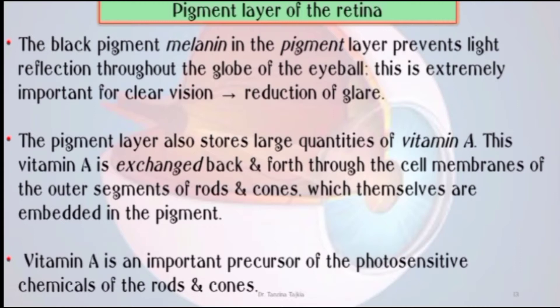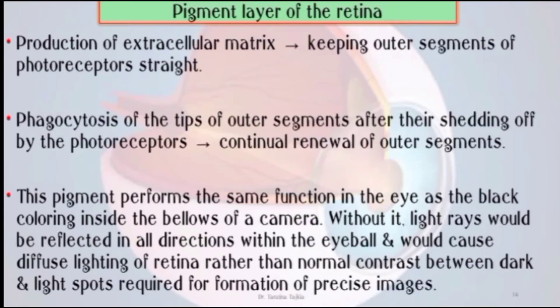Vitamin A is an important precursor of the photosensitive chemicals of the rods and cones. The pigmented layer also produces extracellular matrix, keeps the outer segments of photoreceptors straight, and performs phagocytosis of the tips of the outer segments after they are shed by the photoreceptors. This pigment performs the same function as the black coloring inside the bellows of a camera — without it, light rays would be reflected in all directions within the eyeball, causing diffuse lighting of the retina rather than the normal contrast between dark and light spots required for the formation of a precise image.